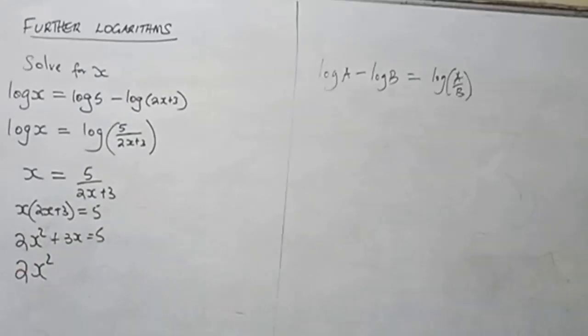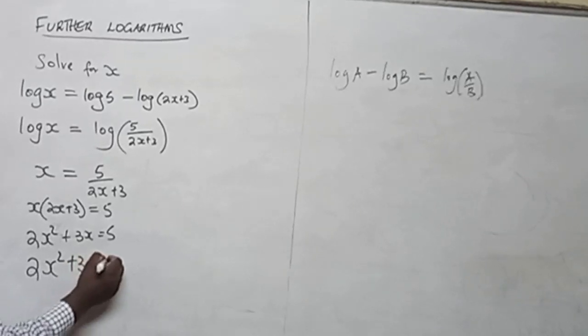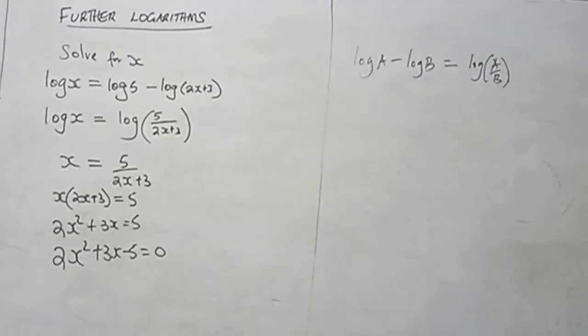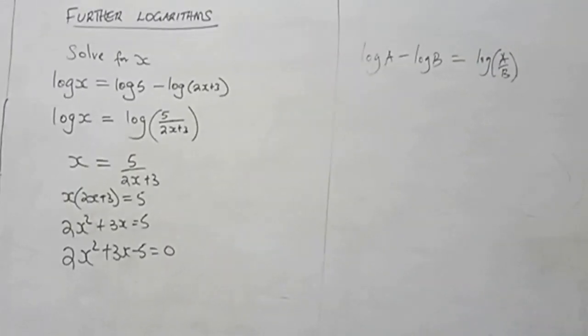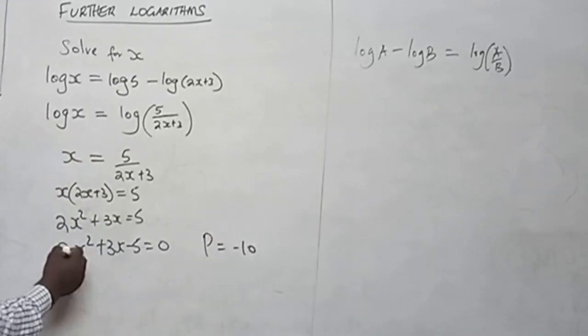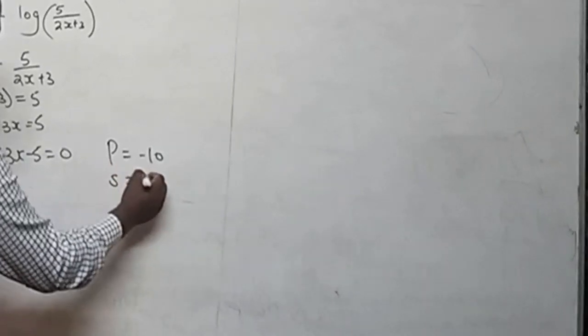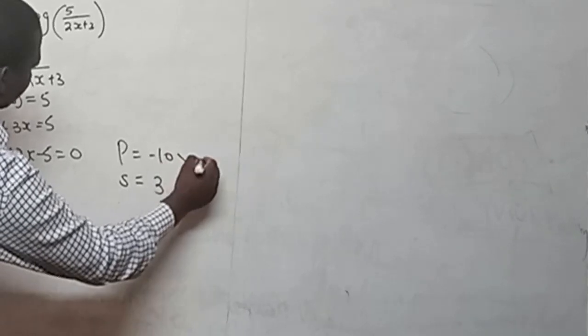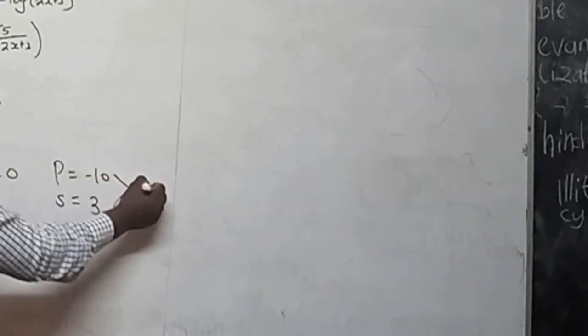Therefore we will have 2x squared plus 3x minus 5 equals 0. Now this is our quadratic equation and we are going to solve it by factorization. So here our product is negative 10 and sum is 3. So we look for two numbers that when we multiply we get negative 10 and when we add we get 3. So the two numbers are going to be 5 and negative 2.